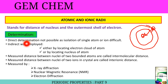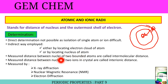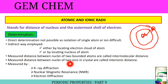How can this radius be determined? Direct determination is not possible because isolation of a single atom or ion is difficult. Therefore, measurement can be done using an indirect way — either by locating the electron cloud of the atom or by locating the nucleus. The measured distance between the nuclei of two bonded atoms is called intermolecular distance, whereas the measured distance between nuclei of two ions in a crystal is called inter-ionic distance. These are measured with the help of X-ray diffraction, nuclear magnetic resonance (NMR), and electron diffraction.